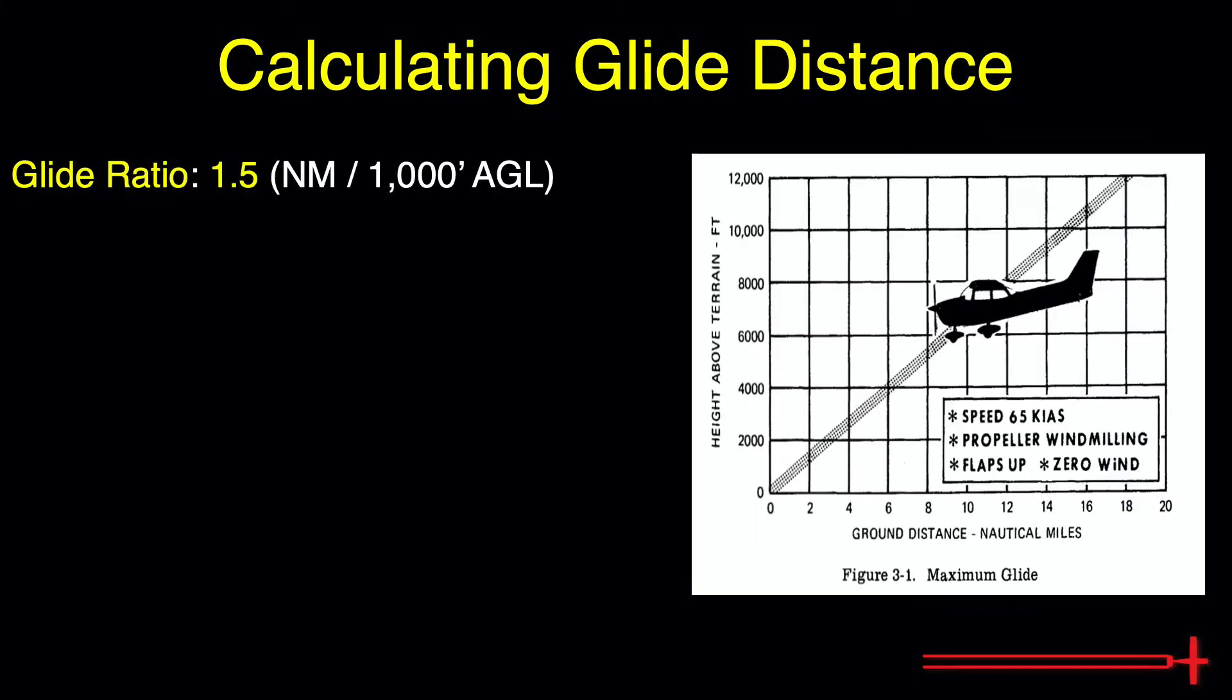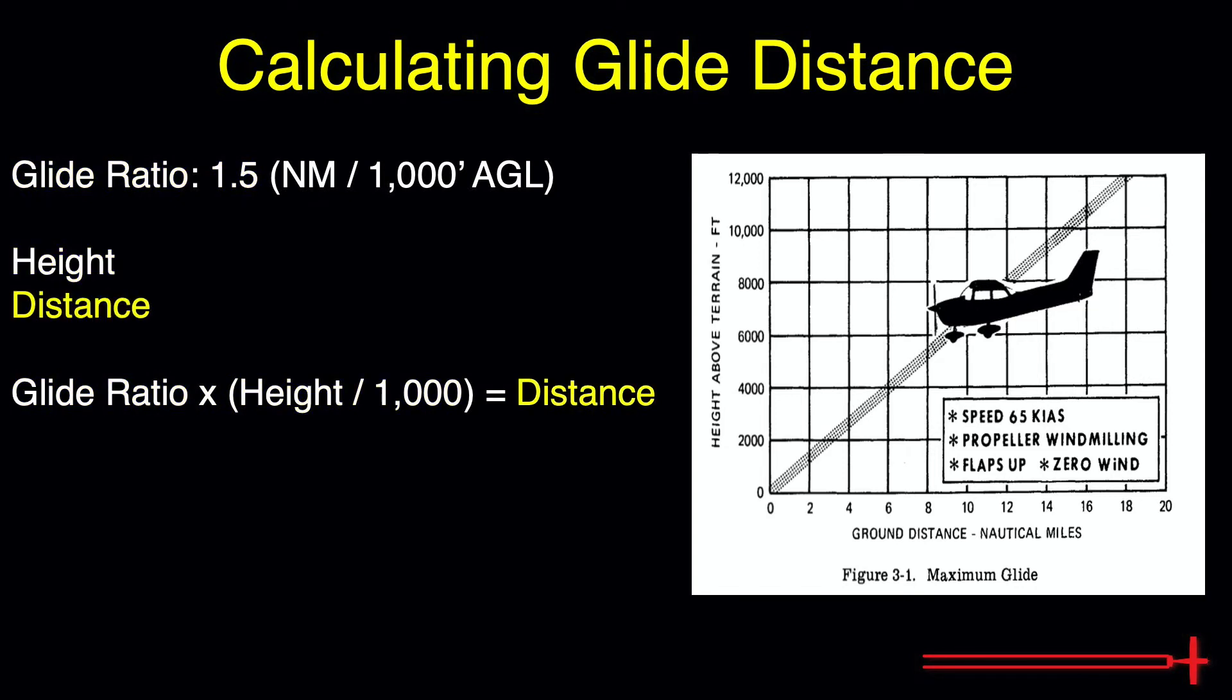Let's apply this glide ratio to our engine failure scenario from earlier, using this simple, super easy to memorize equation. The sum of our glide ratio multiplied by our height above obstacles divided by 1,000 leaves us with our expected glide distance. As long as we have this equation and our aircraft's glide ratio memorized, we can calculate glide distance at any altitude.